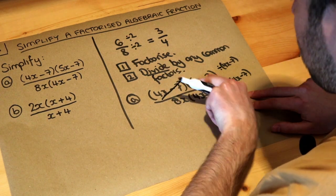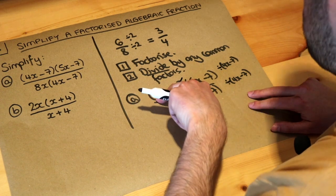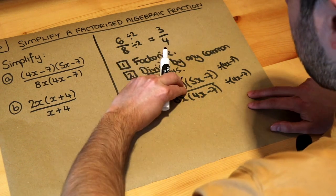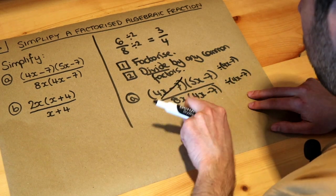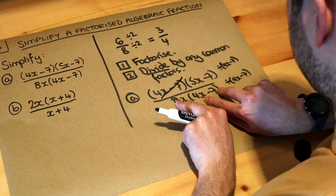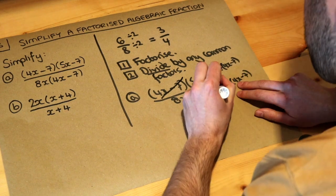Because if this has been times by 4x - 7, and then you're dividing by 4x - 7, the times by and the divide by that same thing cancels each other out. And you can do the same at the bottom. If you've got 8x multiplied by 4x - 7, and then divided by it, it just gets rid of it.